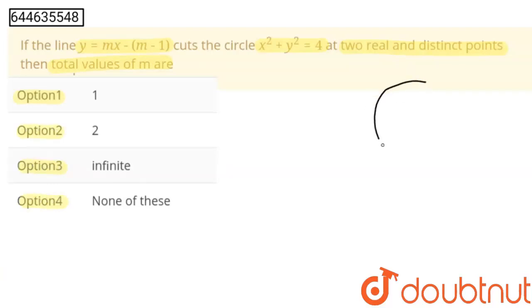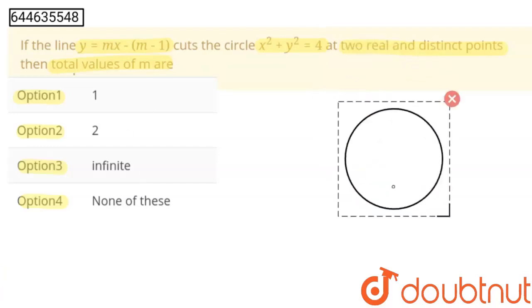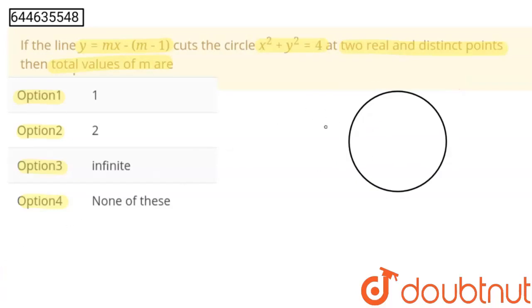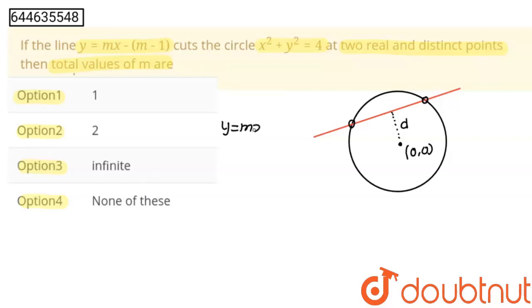Suppose this is a circle and this is our line. If the circle and line both intersect at two distinct points, it means that this line is a chord. A line is a chord when the distance of the center from this line is less than the radius. So the center is (0, 0) and this line is y = mx - m - 1. The distance of this center from this line must be less than the radius.